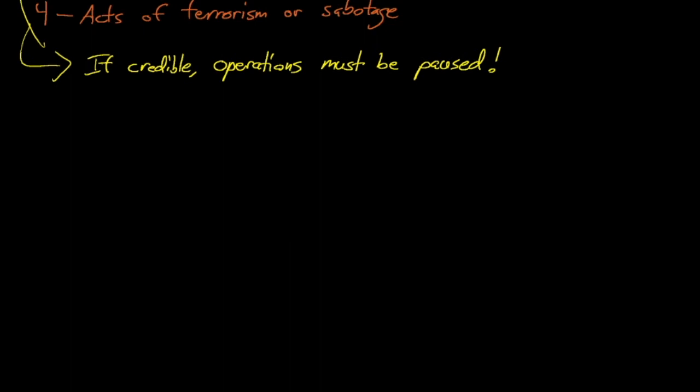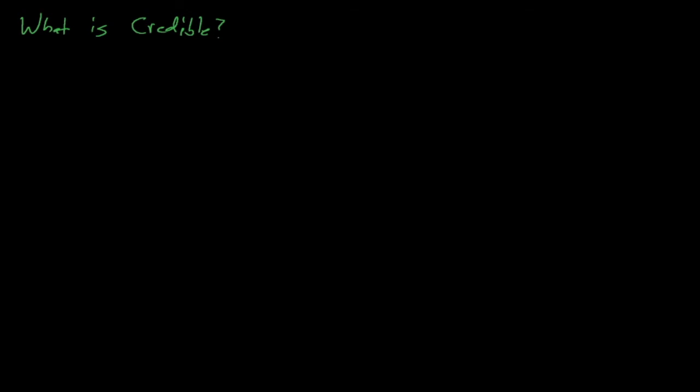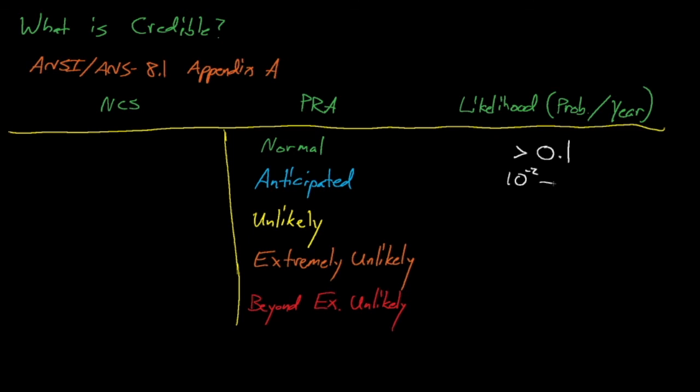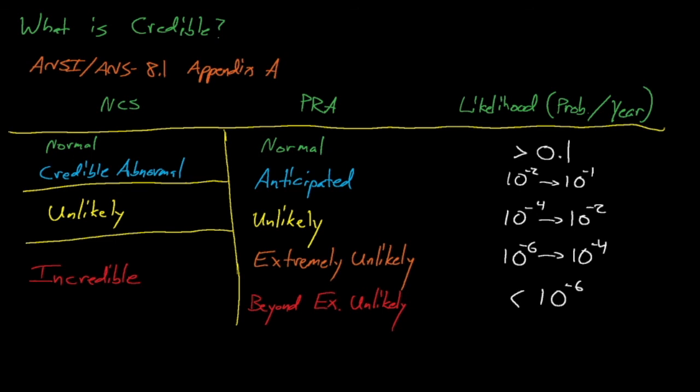So I've mentioned that we can work with operators and their supervisors to determine what the credible abnormal conditions are. But how likely does an event need to be to be considered a credible abnormal event? Appendix A of the ANSI-ANS 8.1 standard outlines the likelihood of credible, unlikely, and incredible events. The field of probabilistic risk assessment, or PRA, also does this for its accidents, and we can compare the likelihood of different events as shown in this table. Normal credible abnormal events can be expected to occur more often than once every 100 years. Unlikely events should occur about once every 1,000 to 10,000 years. And incredible events should happen less than about once every 10,000 to 100,000 years. Different sites might use facility-specific failure probabilities for passive, active, and administrative controls in place of the numbers in this table. However, these numbers can be used as a rough guide for determining the threshold between what is credible, unlikely, and not credible.